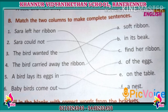The first one is: Sara left her ribbon. Where did Sara leave her ribbon? She left her ribbon on the table. So, Sara left her ribbon on the table — match one with option E in the second column.